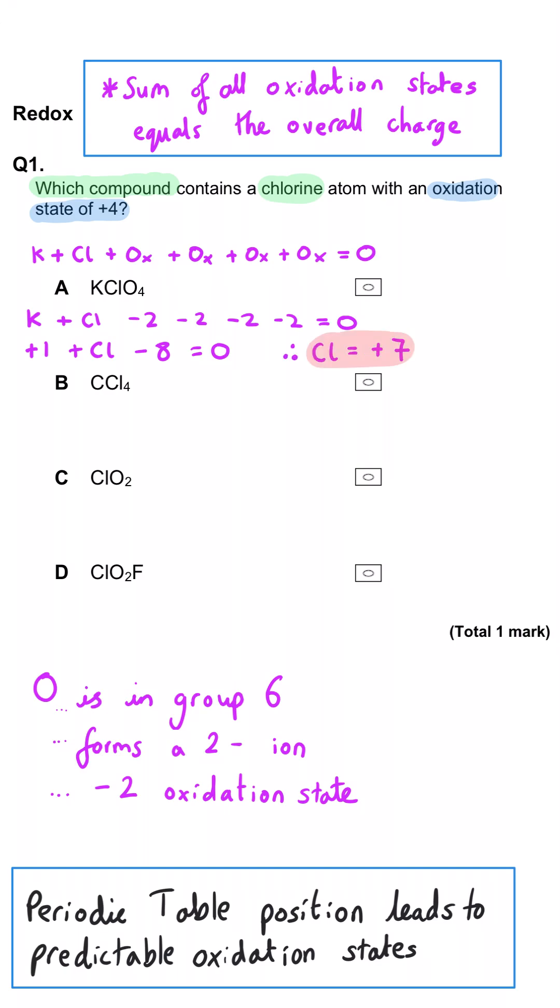In B, 4 chlorines equals 1 carbon. Carbon is in group 4, and so carbon will be plus 4 and chlorine will be minus 1.